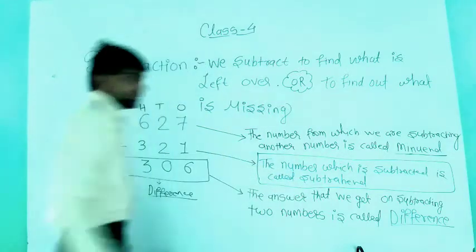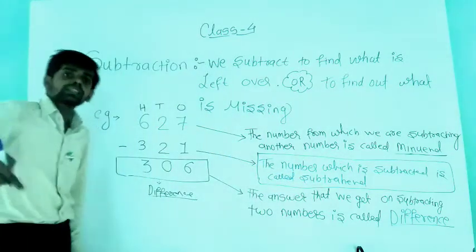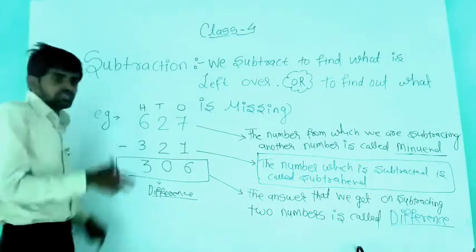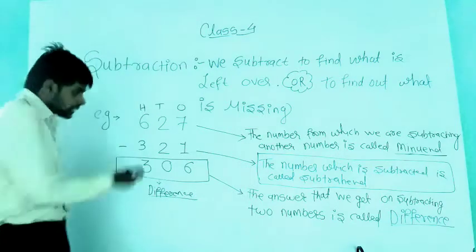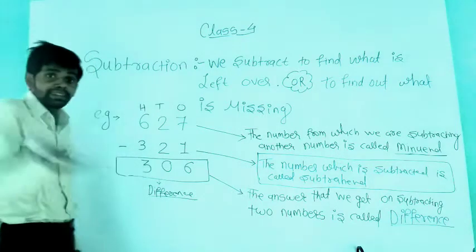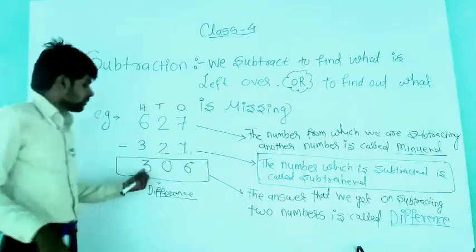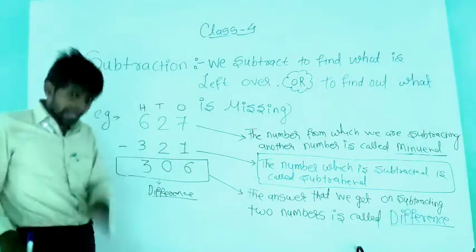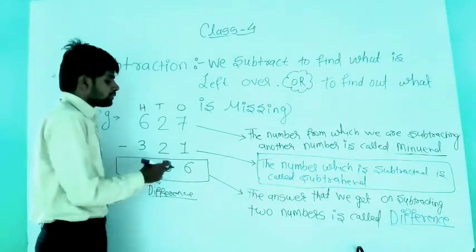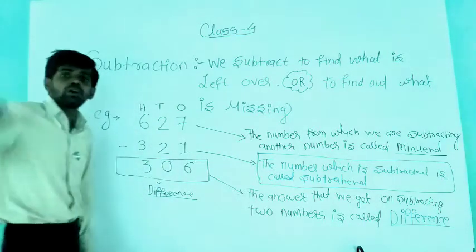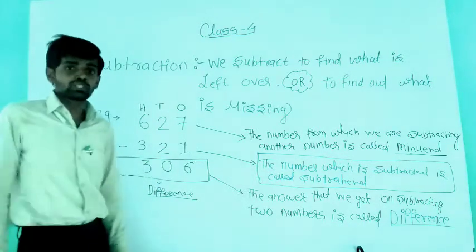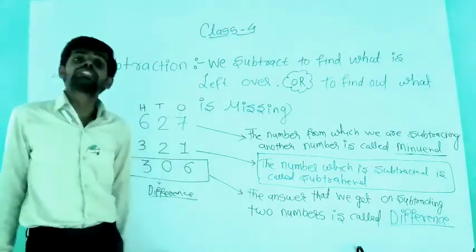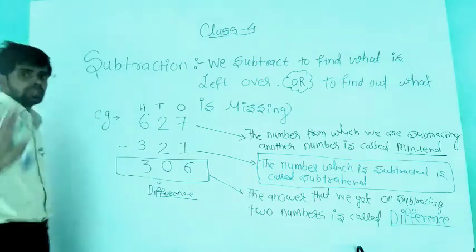That is the subtrahend. And the answer of this subtraction — the result we get after subtracting — is 306. The specific name for the answer of subtraction is called the difference.